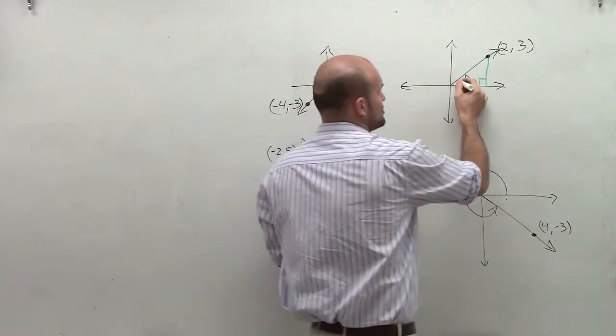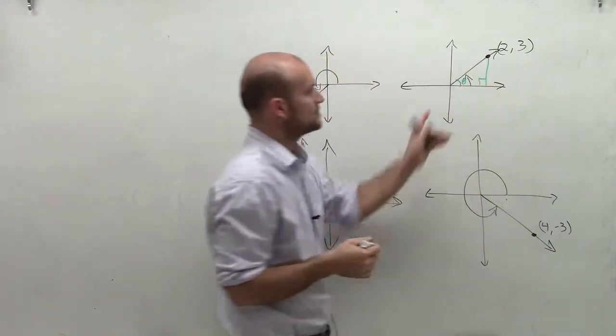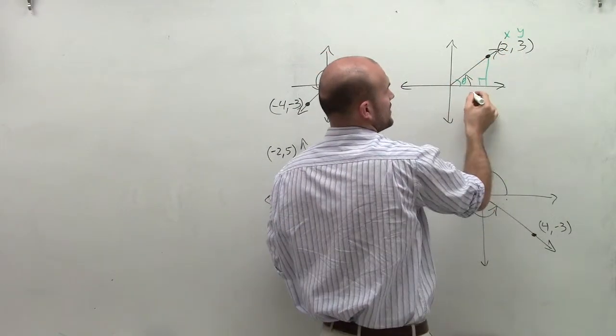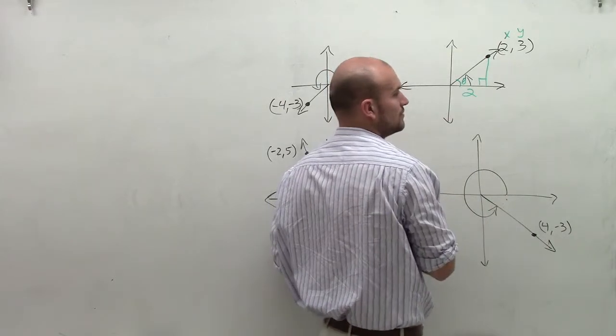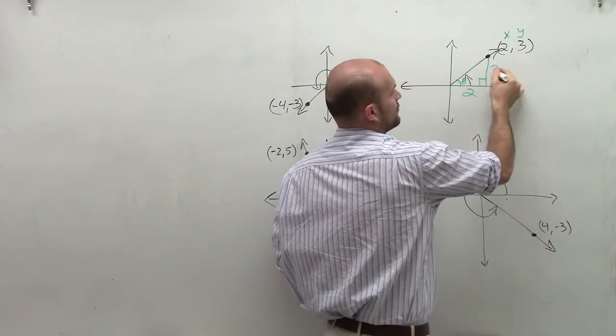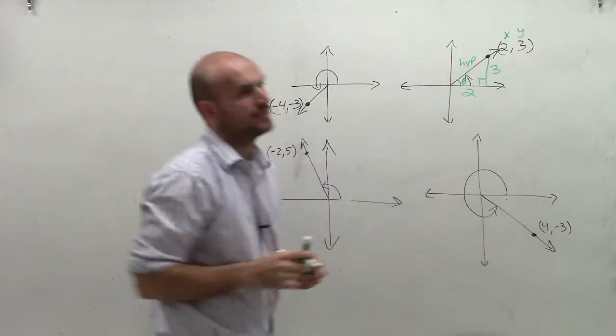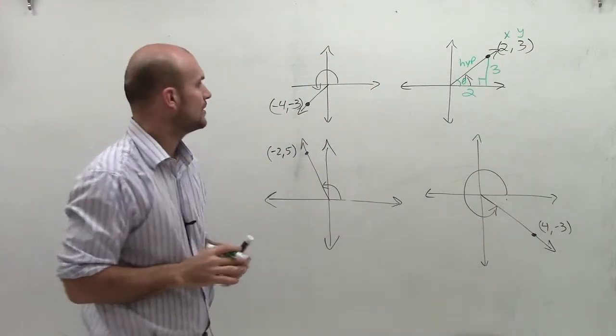So therefore, you can represent now - remember, this is your x and your y-coordinate. So therefore, for my triangle, 2 will be my adjacent side, 3 will be my opposite, and then the terminal side is going to represent my hypotenuse. All right?